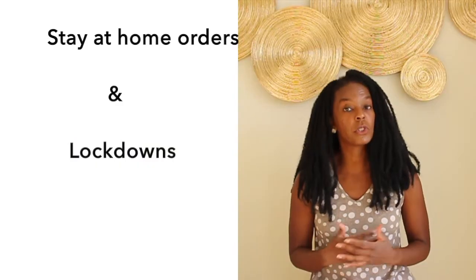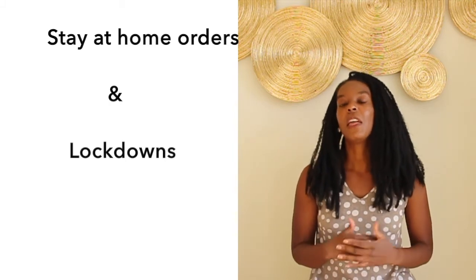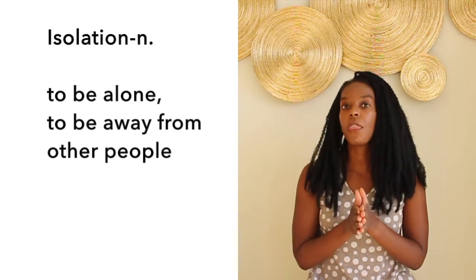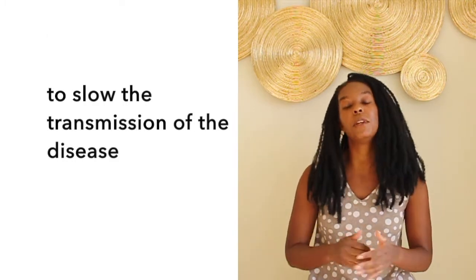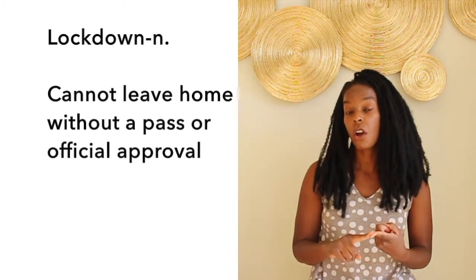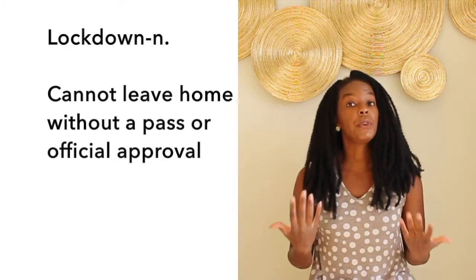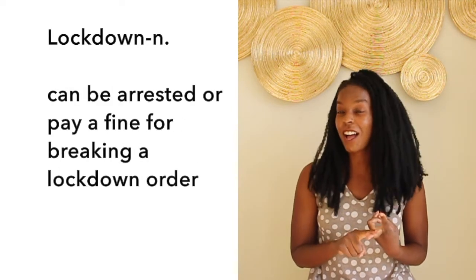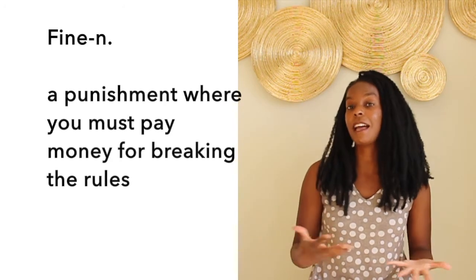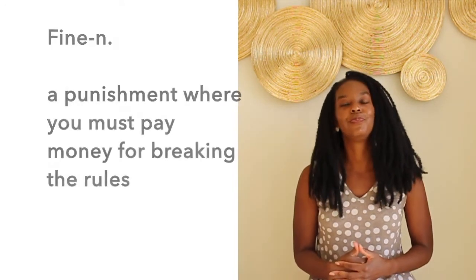Stay-at-home orders and lockdowns are very similar in their goal — they want to keep people in isolation, or keep people alone and away from one another, in order to slow the transmission of the disease. A lockdown is usually more severe than a stay-at-home order. It means that you can't go out without a pass or without an official approval letter, and if you go out without approval, you can also be arrested or you may have to pay a fine. A fine means you have to pay money as punishment for breaking the rules. A stay-at-home order is less severe because usually there's no punishment involved if you break it.